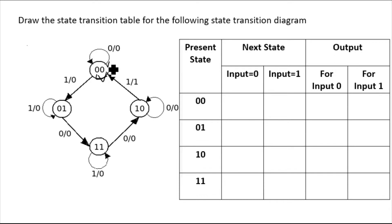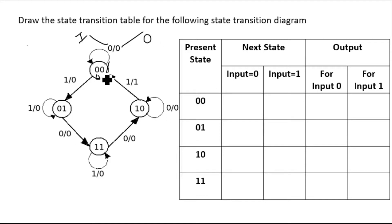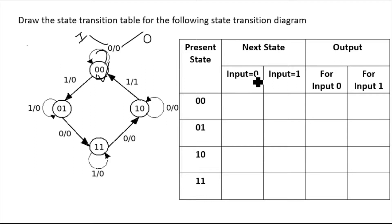Each present state will have two outgoing arrows: one for zero input and one for one input. You can see zero-zero is having this arrow and this arrow. Here, zero-by-zero — this first zero represents the input value and this second zero represents the output value. This arrow is starting from the same state and reaching to the same state, meaning no transition is taking place when the input is zero.